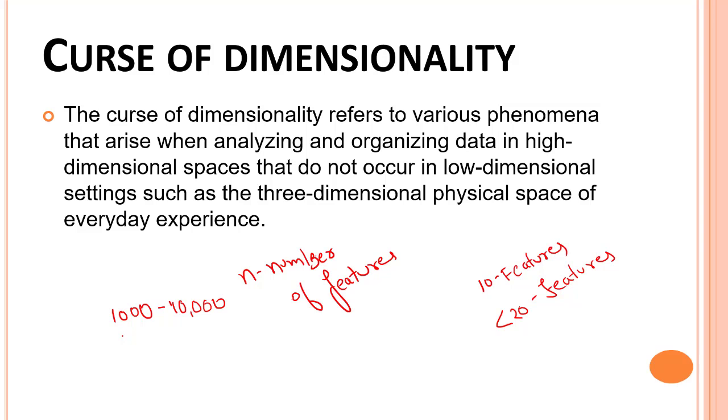The curse of dimensionality refers to a set of problems that arise when working with high dimensional data. High dimensional data is when we have a lot of features. The dimensions of a dataset corresponds to the number of attributes or features that exist in it. A dataset with a large number of attributes, generally of the order of hundreds or more, is referred to as high dimensional data—when we have more than hundreds to thousands of columns.